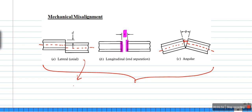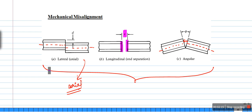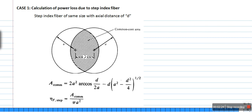Of the three possible mechanical misalignments, the power loss is very high for axial (lateral) displacement. We will first discuss the axial displacement between the fibers, then proceed to longitudinal and angular displacement. We are going to examine axial displacement for both step index fiber and graded index fiber.